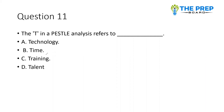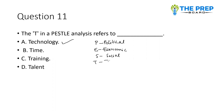In the PESTLE framework, what does the 'T' stand for? Options are: technology, time, training, or talent. The correct option is 'technology.' P is for Political, E is for Economic, S is for Social, T is for Technology — very important to learn for entrepreneurship. L is for Legal and E is for Environment.